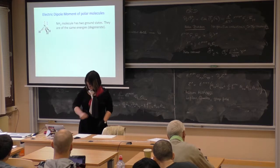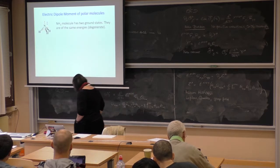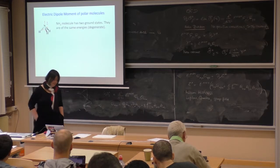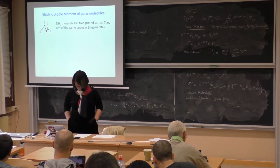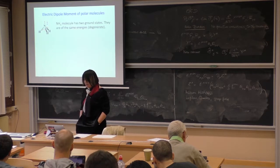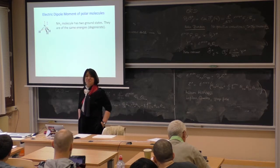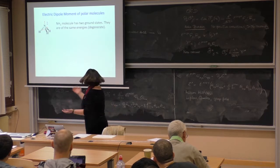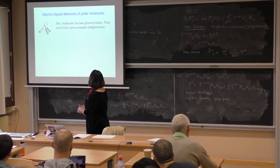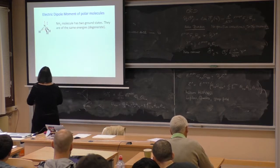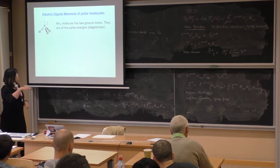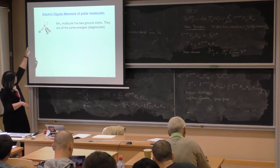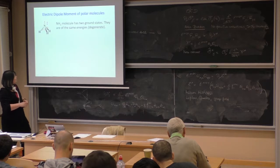EDM — if time reversal symmetry is respected, no EDM is allowed. But how can we already have large EDM in normal polar molecules? In this example it would be ammonia. You have three hydrogens on the bottom — that's where the negative charge will be — and one nitrogen on top, so you have positive charge on top, negative charge on the bottom. So you have an EDM.